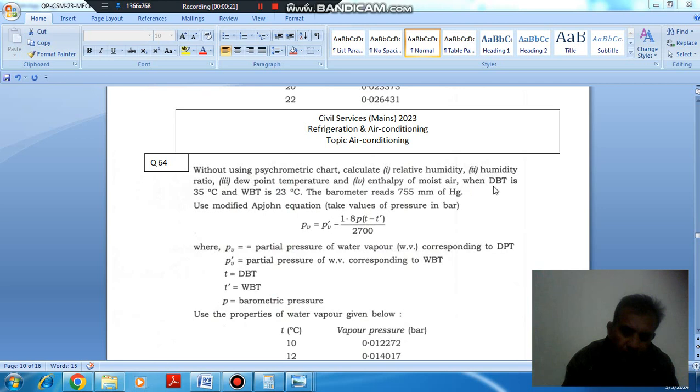Enthalpy of moist air when DBT is 35 degree Celsius and WBT is 23 degree Celsius. The barometer reads 755 mm of Hg. Use modified Apjohn equation. Take values of pressure in bar.